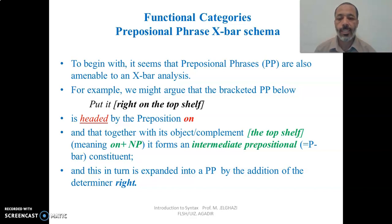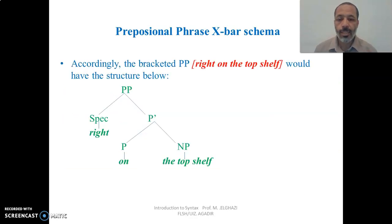'On the top shelf' is a prepositional phrase. We say that it is an intermediate prepositional constituent because it consists only of the preposition and the complement without including the determiner 'right.' The representation following the X-bar schema shows P as the head, followed by the noun phrase 'the top shelf' as the complement. Both the preposition and the NP complement project into a P-bar — an intermediate level category — and this intermediate category, associated with the specifier 'right,' projects into a maximal projection PP.